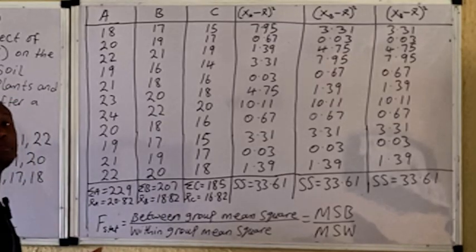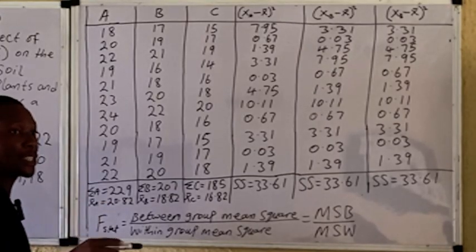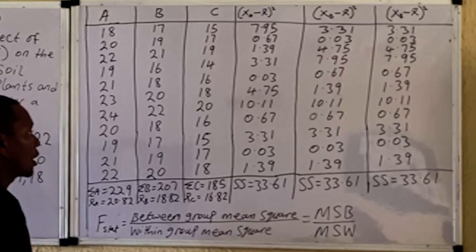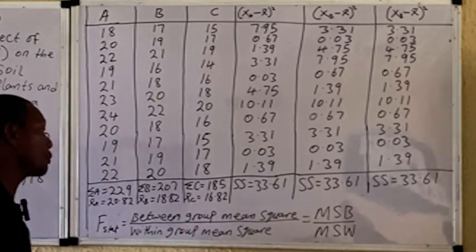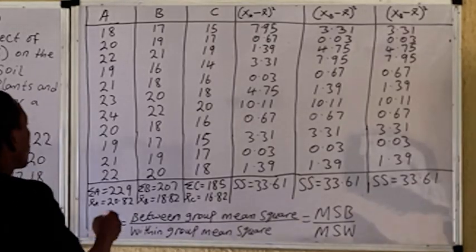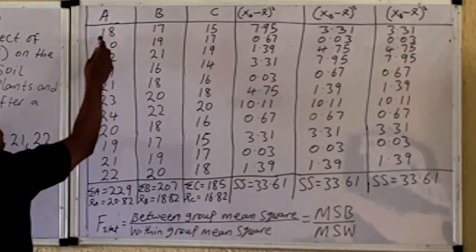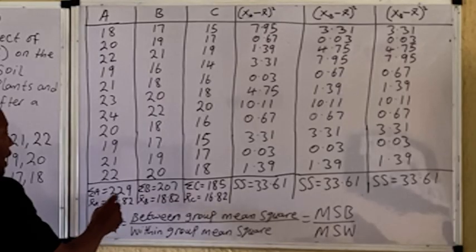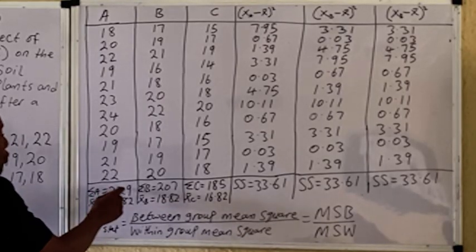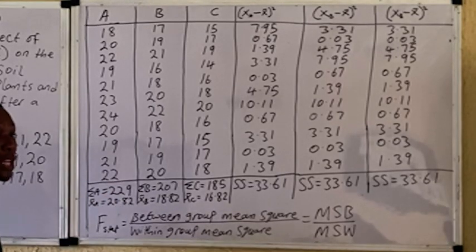After finding the sums, calculate the mean for each group. The mean is the sum of X divided by N, the number of values. There are 11 values in each group. The mean of A is 229 divided by 11, which equals 20.82 (approximately). The mean of B is 207 divided by 11, which equals 18.82. The mean of C is 185 divided by 11, which equals 16.82.